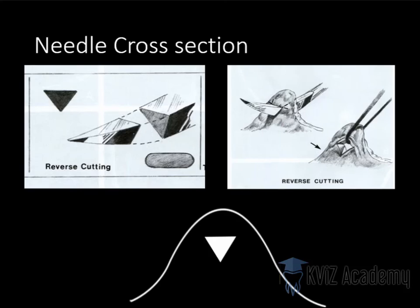So reverse cutting is more preferable — not only for oral surgeons, but for any surgeon — as it is less traumatic. Round body and a few other cross sections also exist, such as square shape, but you need to know these three main types.